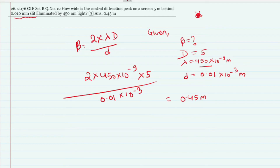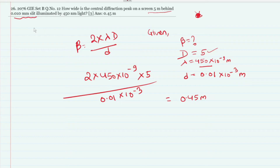So the formula is 2λD divided by d, where capital D is the distance between the screen and the slit, small d is the slit width, and lambda is the wavelength. A larger D gives more width, and the lambda determines the width of the diffraction peak.